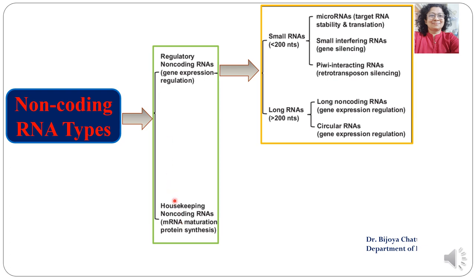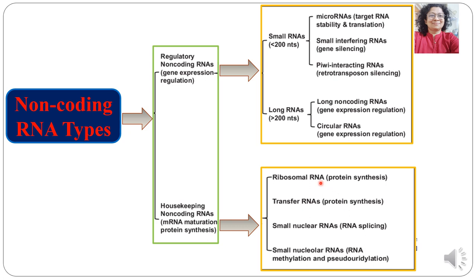The second category, the housekeeping non-coding RNAs, which are always active, are further classified into ribosomal RNA, involved in protein synthesis; transfer RNA, also involved in protein synthesis; small nuclear RNA (snRNA), which are catalytic in nature and carry out RNA splicing; and small nucleolar RNA (snoRNA), which are involved in methylation and pseudouridylation. This is the classification of non-coding RNA.